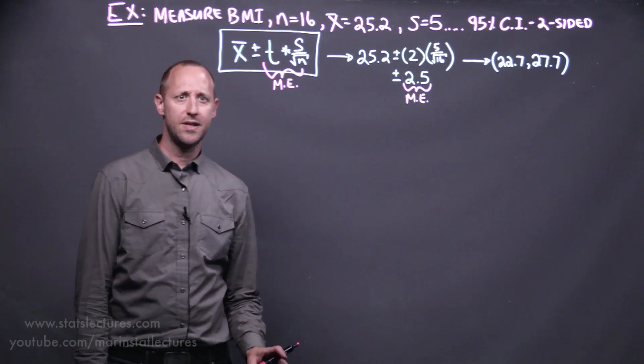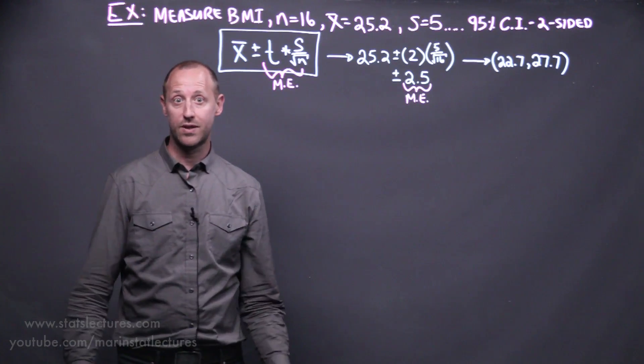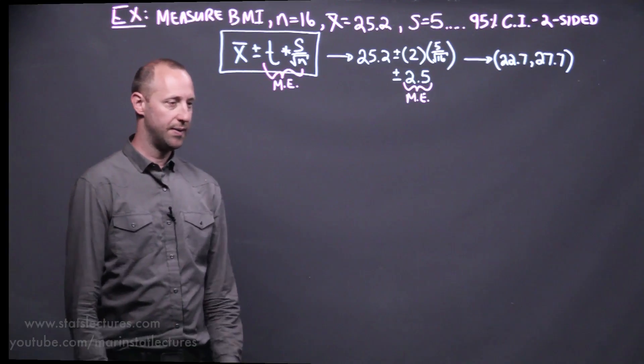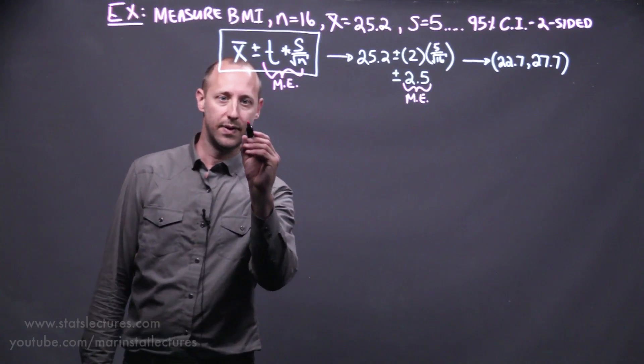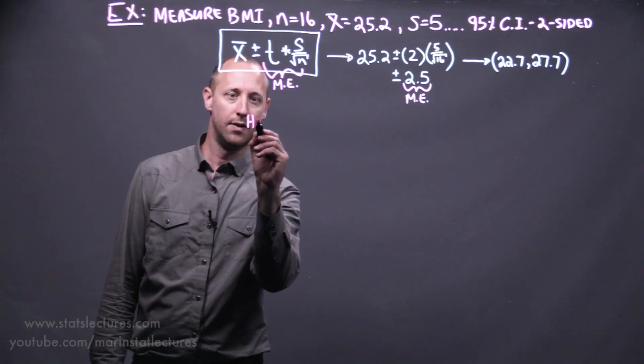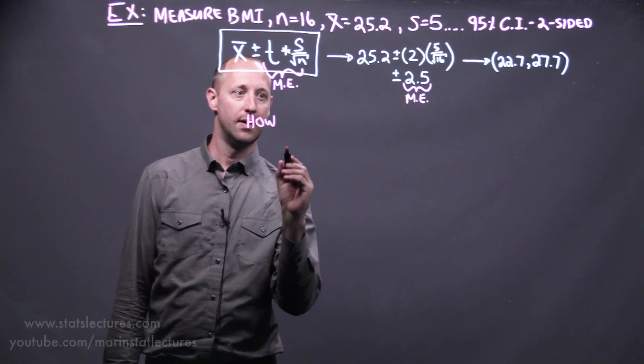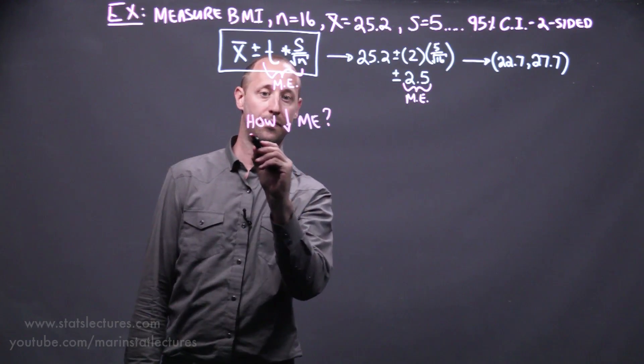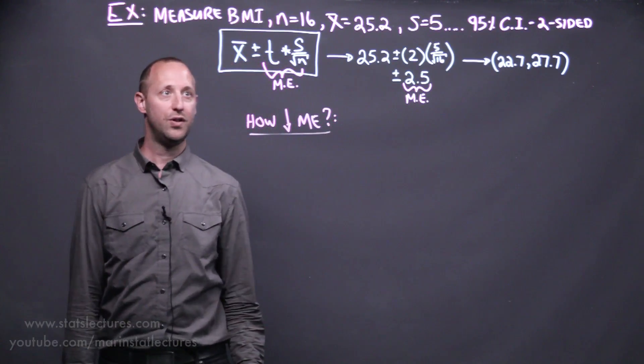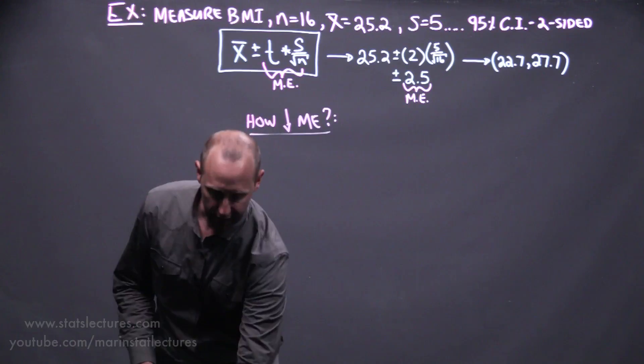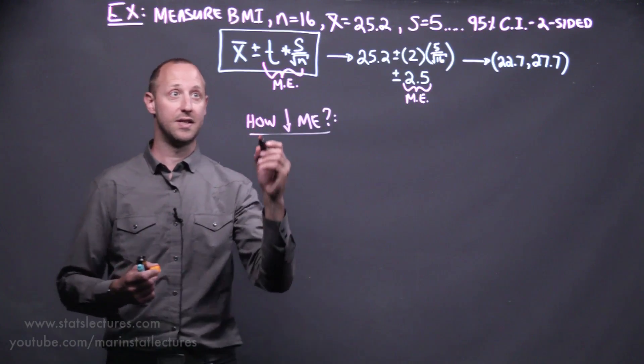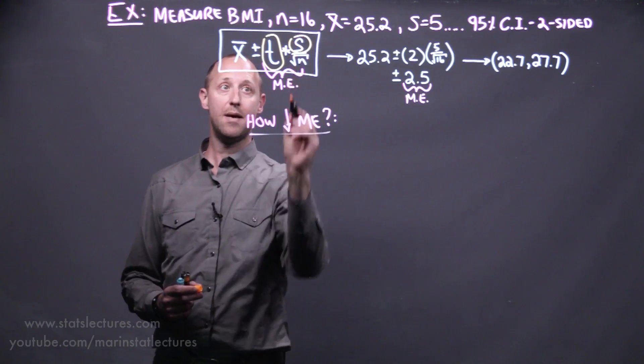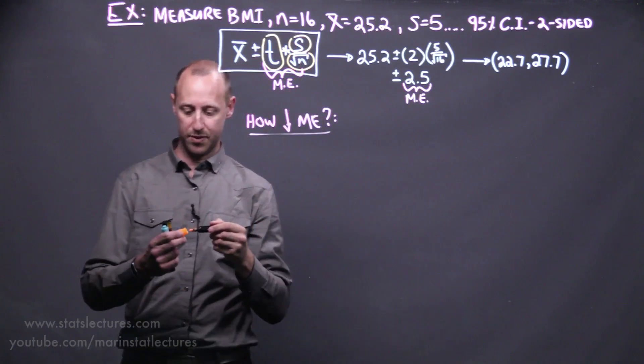So first let's talk a little bit about what controls this margin of error so we can think about how we can try and reduce it. So let's talk about how we can decrease the margin of error. You can notice that the margin of error depends on three things: the t-value that we're using, the sample standard deviation, and the sample size.